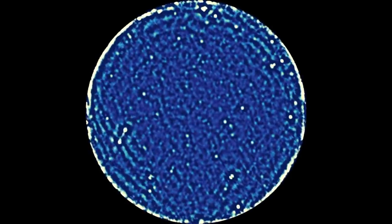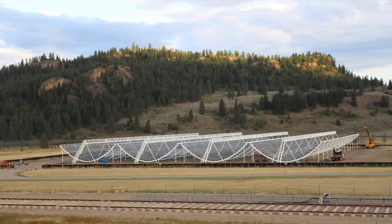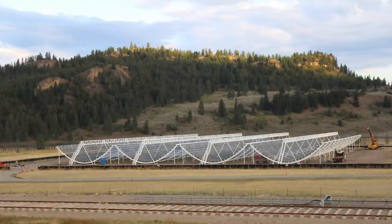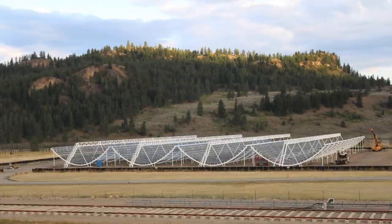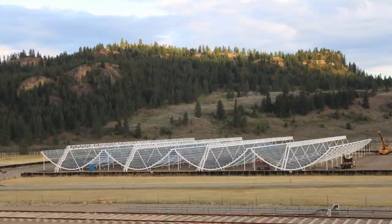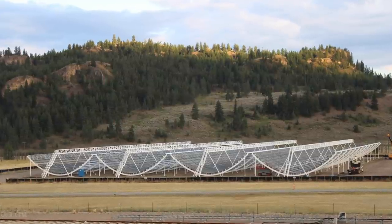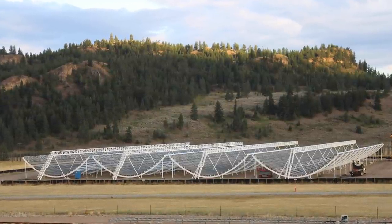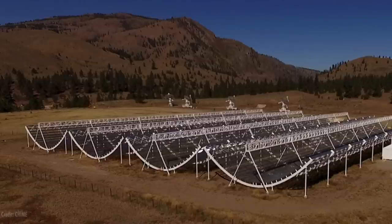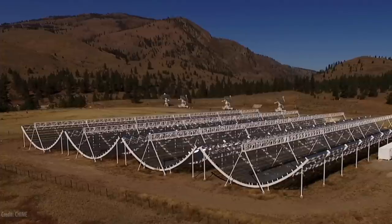CHIME is a new telescope which we have built in British Columbia. It consists of these four half cylinders. They look like snowboarding half pipes, which are 20 meters wide and 100 meters long. CHIME doesn't look at different parts of the sky like most telescopes. It doesn't point to specific locations in the sky. It just looks straight up. And as the sky rotates, it maps the entire sky in a day. It looks at a huge swath of the sky at any given point of time, and that gives it an enormous amount of power to detect and characterize fast radio bursts.